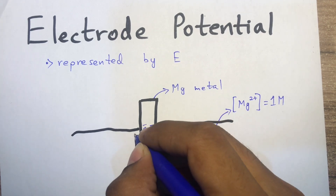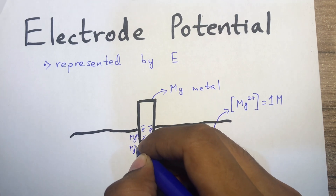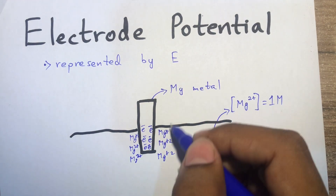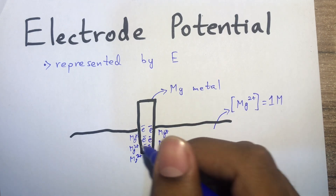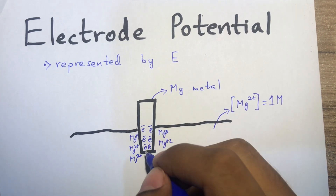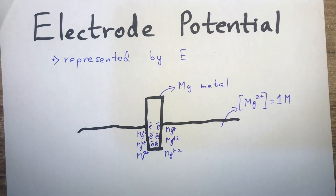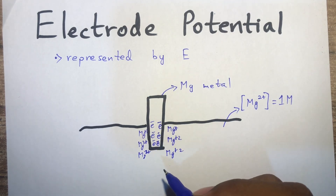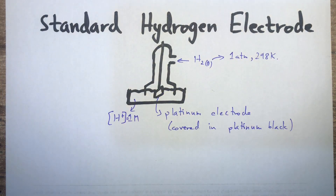So the magnesium ion (2+) enters the solution, making the solution more positive while the rod becomes negative. This creates an electrostatic attraction between the rod and the solution, and this attraction is called the electrode potential. However, we cannot calculate electrode potential directly, so we use a standard hydrogen electrode.